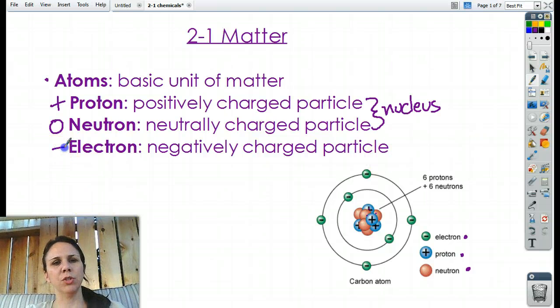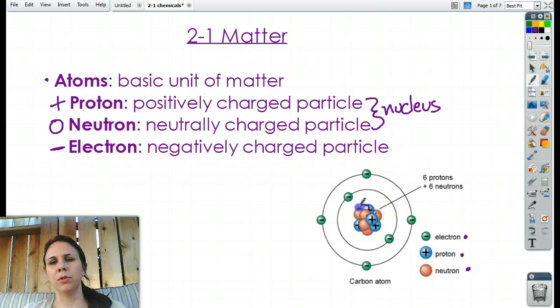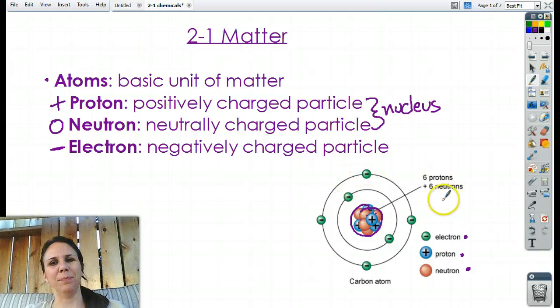And then we have the electron, which is negatively charged. And these are always floating around the outside of the nucleus. Not necessarily in perfect little orbits like this, but that's usually how we draw it, because it's nice and simple. So atoms are made out of protons, electrons, and neutrons. Protons and neutrons in the middle make up the nucleus. And the negative electrons around the outside make up the electron cloud, is what they call it. But they float around the outside.